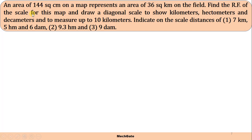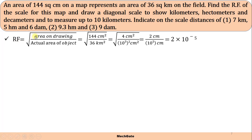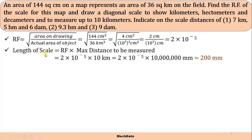For area problems, RF = √(area on drawing ÷ actual area). Area on drawing is 144 cm² and actual area is 36 km². Simplifying this gives RF = 2 × 10⁻⁵. The maximum distance to be measured is 10 kilometers. Using length of scale = RF × maximum distance, we get the length of scale equal to 200 millimeters.